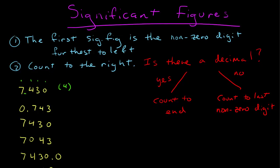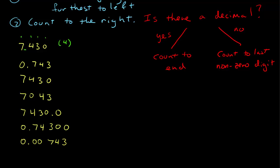How about 0.743? The non-zero furthest to the left is 7 in this case. There is a decimal. Count to the end: 1, 2, 3. This has three significant digits.